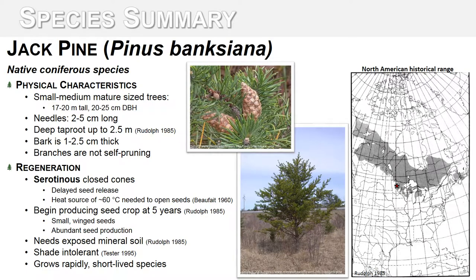A dominant species in the canopy of dry jack pine forests is Pinus banksiana, or jack pine, a native coniferous cone-bearing tree. This species is relatively small in relation to other pine species. It normally grows to be 17 to 20 meters tall and gets to be about 20 to 25 centimeters wide at diameter breast height. This tree has short needles that are about 2 to 5 centimeters long and thin bark about 1 to 2 and a half centimeters thick. In sandy soils this species can develop a taproot up to 2 and a half meters. Jack pines have many fire adaptations and life history traits that allow it to survive and promote intense stand replacing fires.